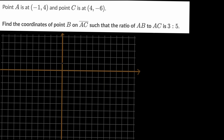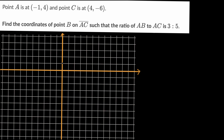All right, now let's work through this together. And to help us visualize, let's plot these points. First, let us plot point A, which is at negative one comma four.